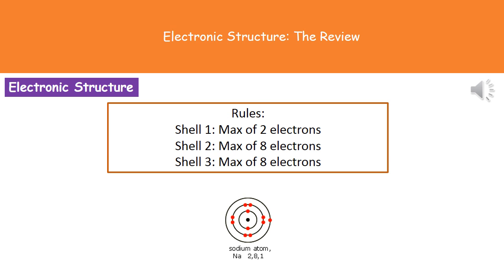To work out electronic structures correctly, we need to remember three rules. First, the innermost shell (shell one, closest to the nucleus) can hold a maximum of two electrons. Shell two, the next one out, can hold a maximum of eight electrons, and the third shell can hold a maximum of eight electrons.